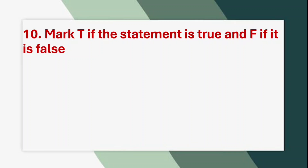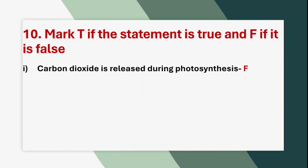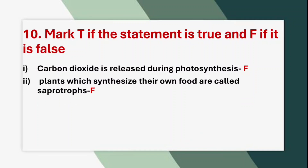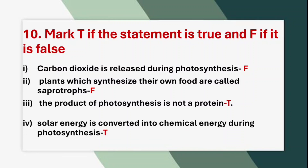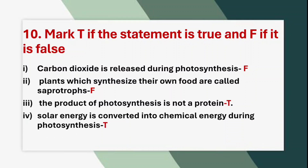Tenth question — Mark T if the statement is true and F if it is false. (A) Carbon dioxide is released during photosynthesis. Answer: False. (B) Plants which synthesize their own food are called saprotrophs. Answer: False. (C) The product of photosynthesis is not a protein. Answer: True. (D) Solar energy is converted into chemical energy during photosynthesis. Answer: True.